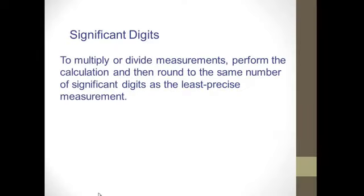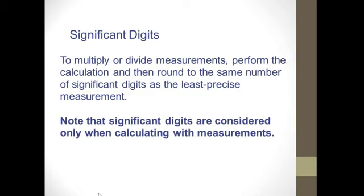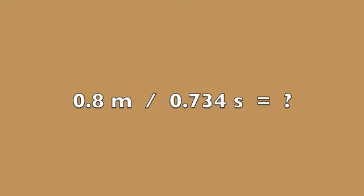To multiply or divide measurements, perform those multiplications and divisions and then keep the same number of significant digits as the least precise measurement. Significant digits are considered only when we are measuring, not counting. Again, don't round until the end. Thank you.